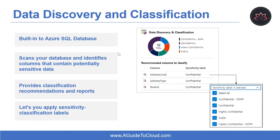What is data discovery and classification? Data discovery and classification is built into Azure SQL database and provides advanced capabilities for discovering, classifying, labeling, and reporting the sensitive data in your database. Your most sensitive data might include business, financial, healthcare, or personal information. Discovering and classifying this data can play a pivotal role in your organization's information protection approach. Data discovery and classification is part of the advanced data security offering, which is a unified package for advanced SQL security capabilities. Data encryption at rest is a mandatory step towards data privacy, compliance, and data sovereignty.